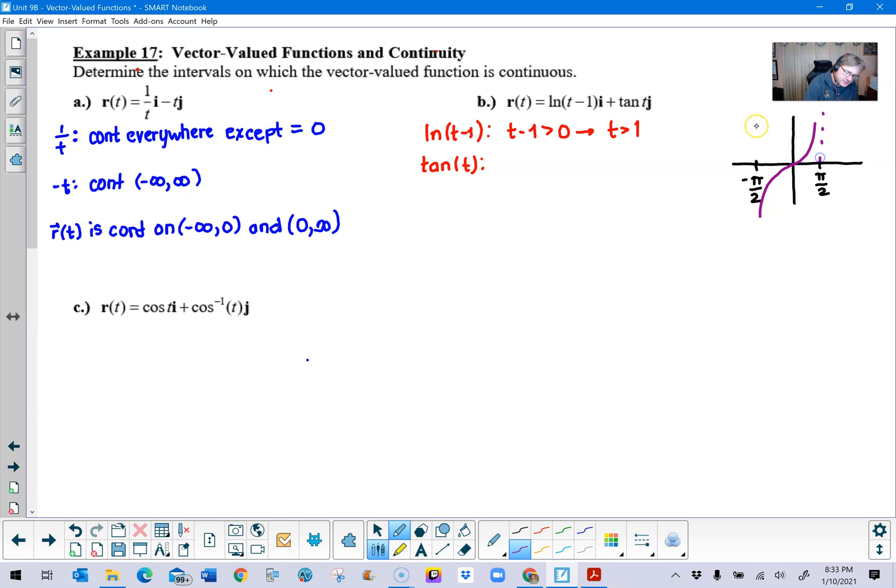Vertical asymptotes are at negative pi over two and positive pi over two, and then we also want to recall the fact that this will continue this behavior and we will have these vertical asymptotic behavior at various locations of odd pi over two.